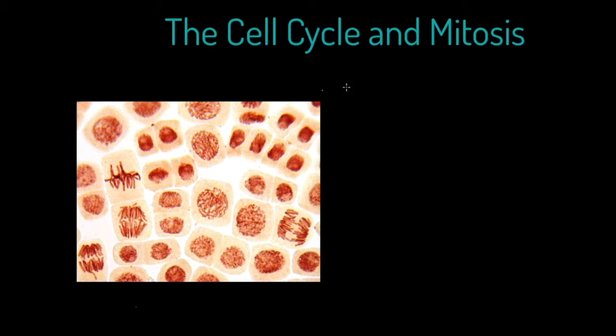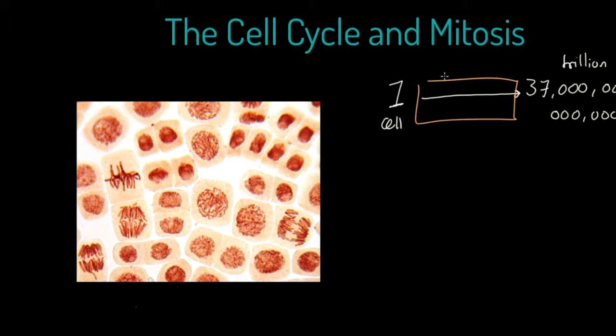Once upon a time in the existence of you, you were one single cell. Over the course of your life, that cell is going to divide into 37 trillion cells. It's a stunning statistic and it really begs the question: how the heck does that happen? What is that process? We're interested therefore in the process of mitosis, which is the how of this.